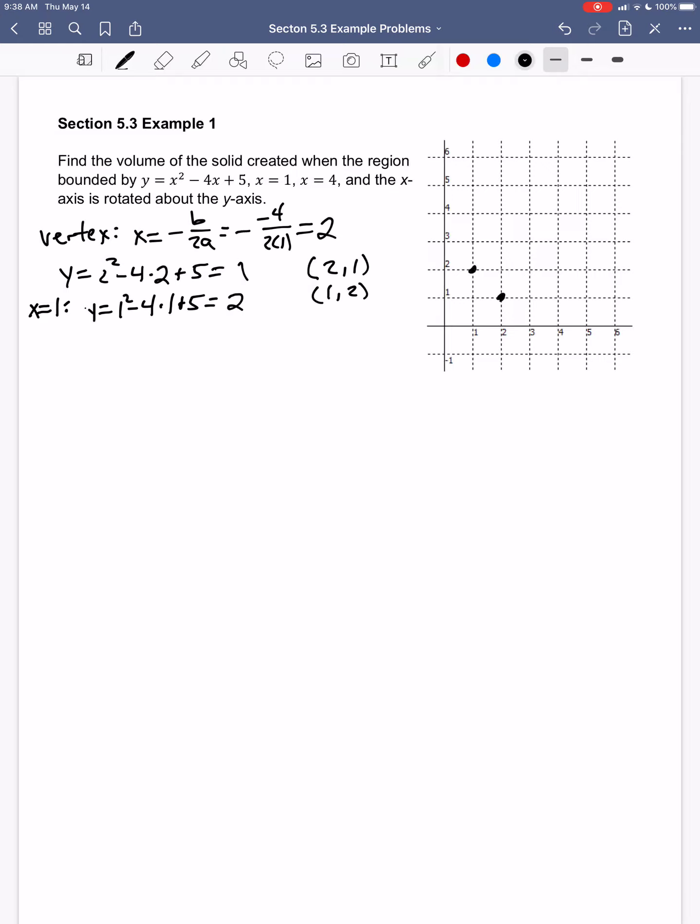If I let x equal 4, y would be 4 squared minus 4 times 4 plus 5, 16 minus 16 plus 5, would just be 5, so that would be the point (4, 5).